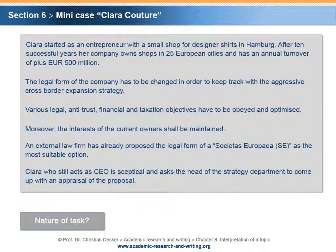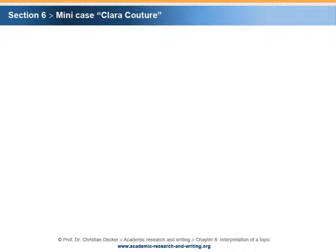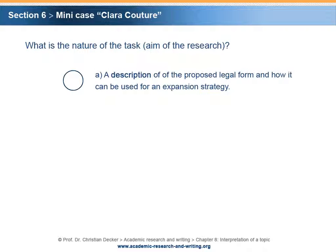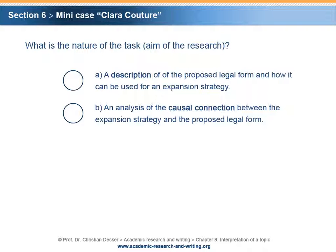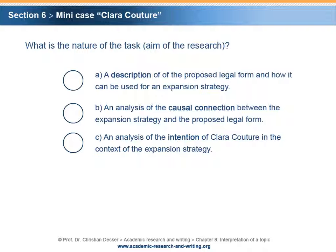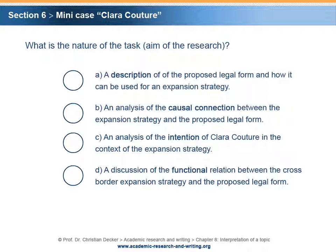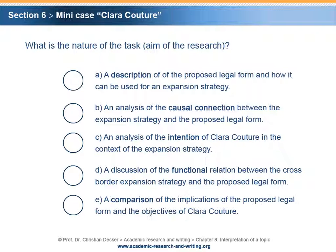What is the nature of the task? In which way should the proposal be appraised? Please stop here and take ten minutes to think about the two questions and to write down short answers. What is the nature of the task or aim of the research? A. A description of the proposed legal form and how it can be used for an expansion strategy. B. An analysis of the causal connection between the expansion strategy and the proposed legal form. C. An analysis of the intention of Clara Couture in the context of the expansion strategy. D. A discussion of the functional relation between the cross-border expansion strategy and the proposed legal form. E. A comparison of the implications of the proposed legal form and the objectives of Clara Couture.